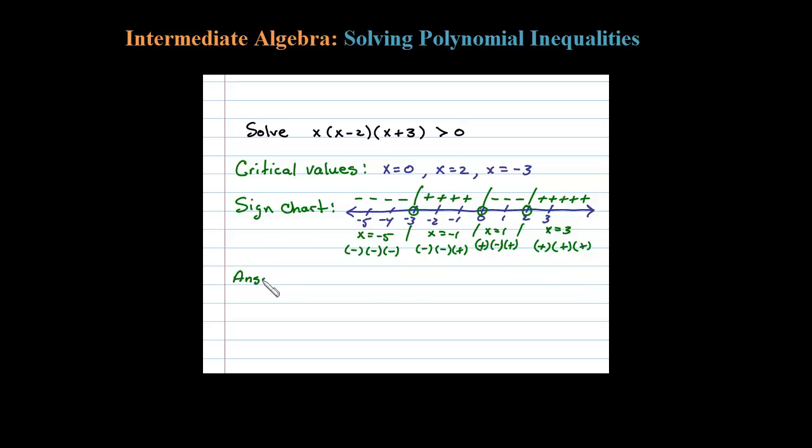Now we're going to use the sign chart to answer the question. The question is when is this expression greater than zero? In other words, when is it positive? Well using our sign chart, we can see the results are positive for these x values and the results are positive also for these x values. Okay, so that's our answer shaded on a number line.